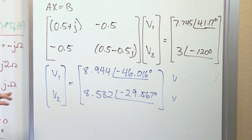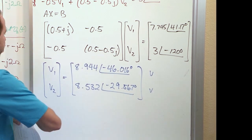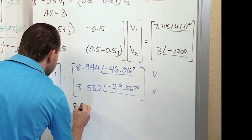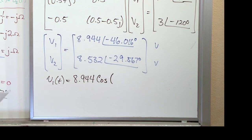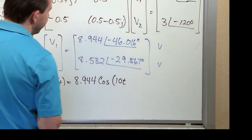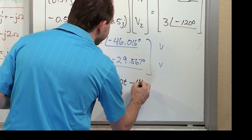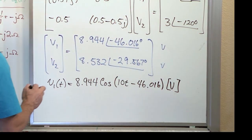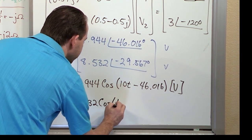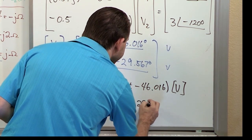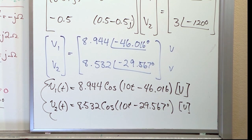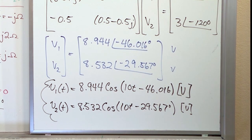The problem asks for voltages as functions of time. The phasor magnitude becomes the amplitude and the phase angle carries over directly. The frequency is 10 rad/s from the original sources. So: V1(t) = 8.944 cos(10t − 46.016°) V and V2(t) = 8.532 cos(10t − 29.567°) V. These are what you would circle on your test.